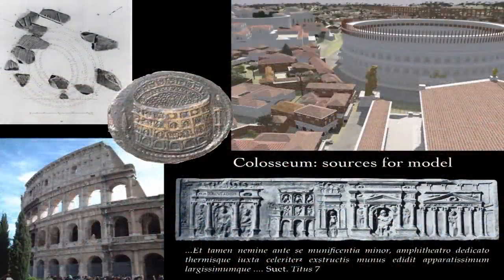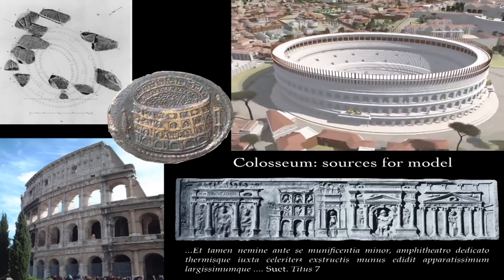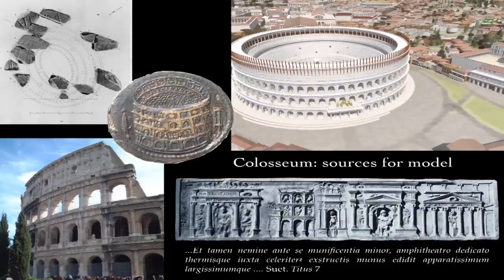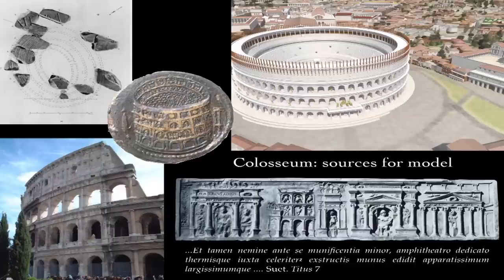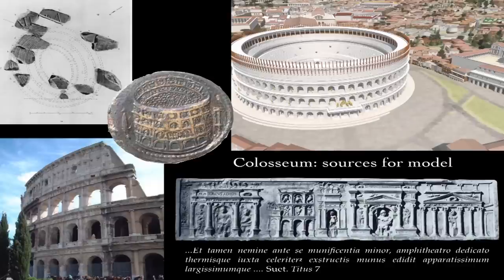What evidence do we use? For the Colosseum, the standing remains are the most useful resource — it unusually survives in part to full height. But we also use the tomb of a building contractor who depicted it there, ancient authors like Suetonius, coins on which emperors proudly placed images of it, and fragments of the Severan marble map of ancient Rome. Literary, epigraphic, iconographic, numismatic, and archaeological source material all combines for each building to produce an accurate and fair representation of how it appeared when new.